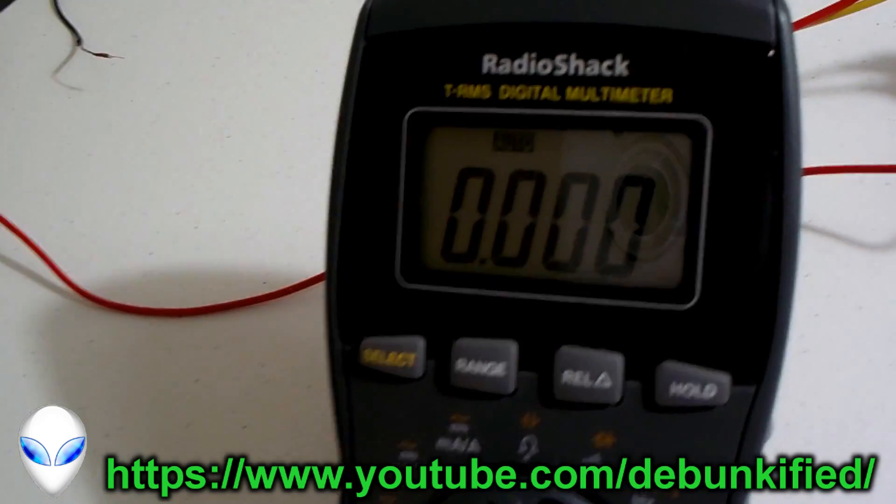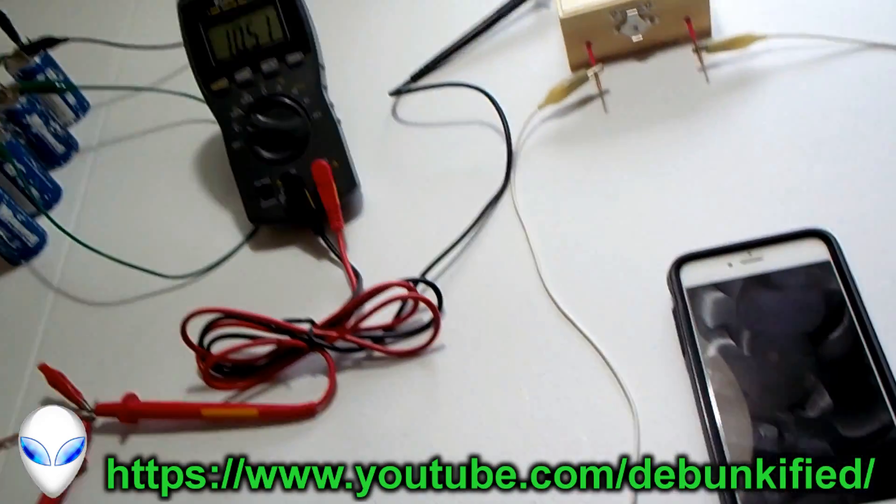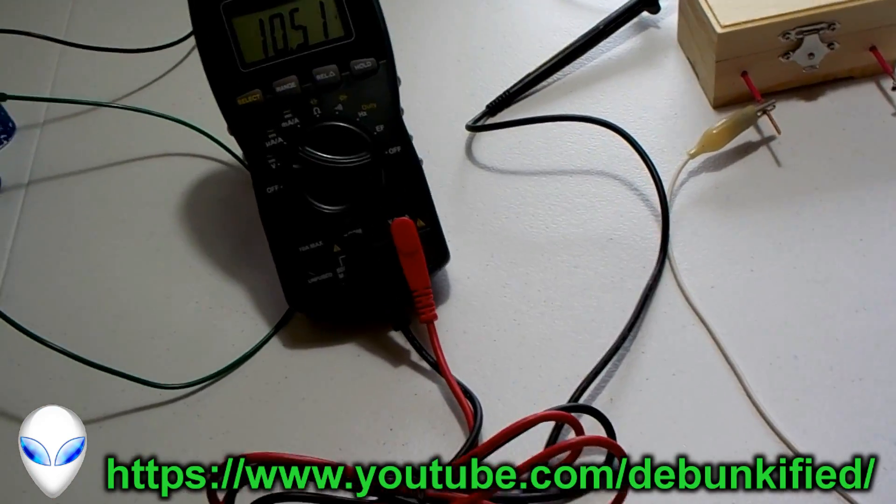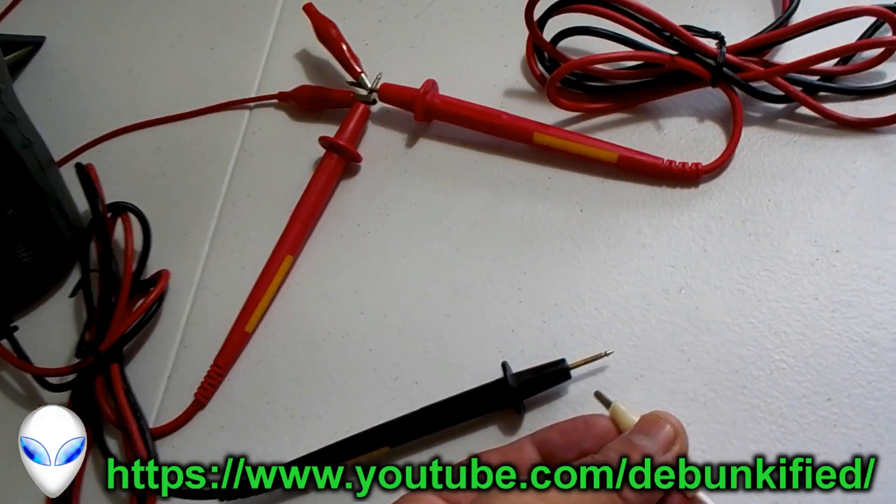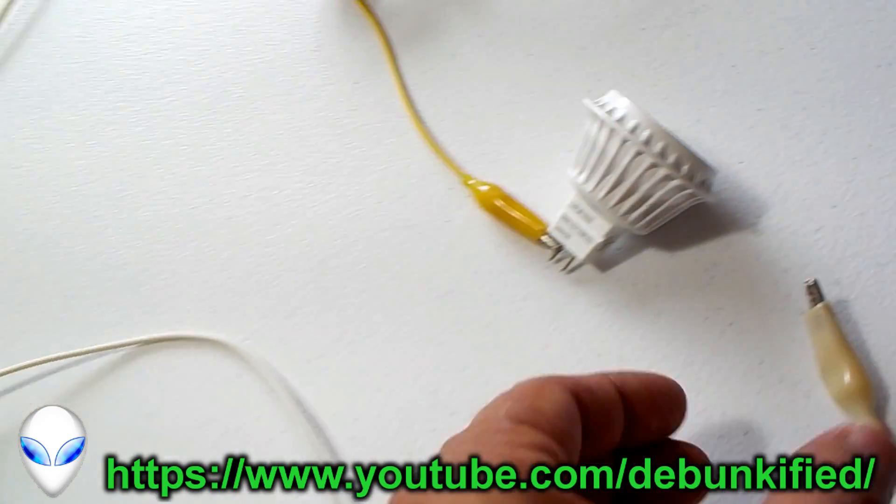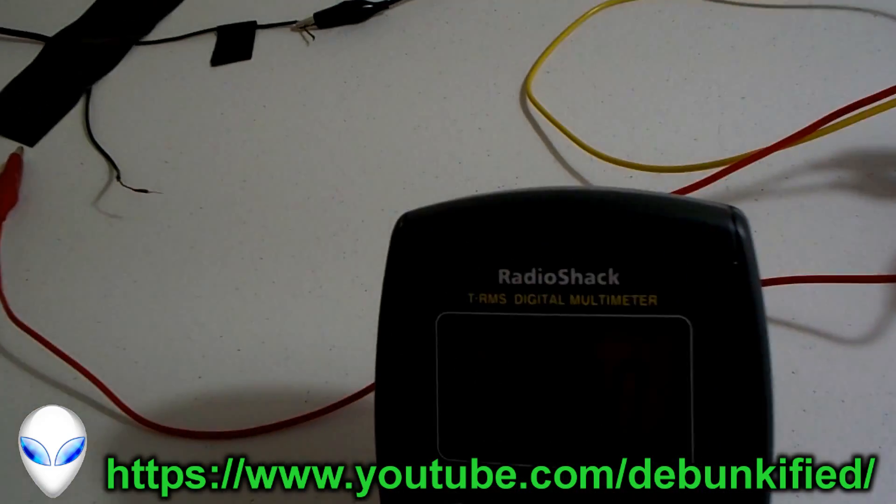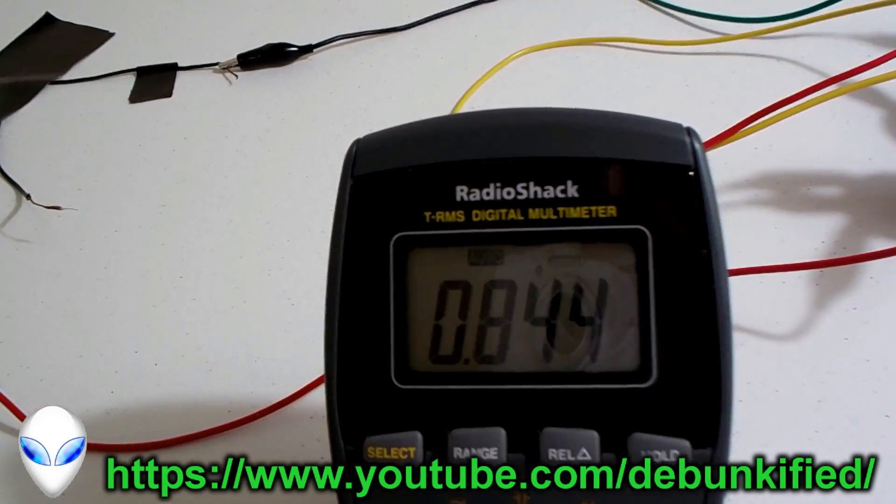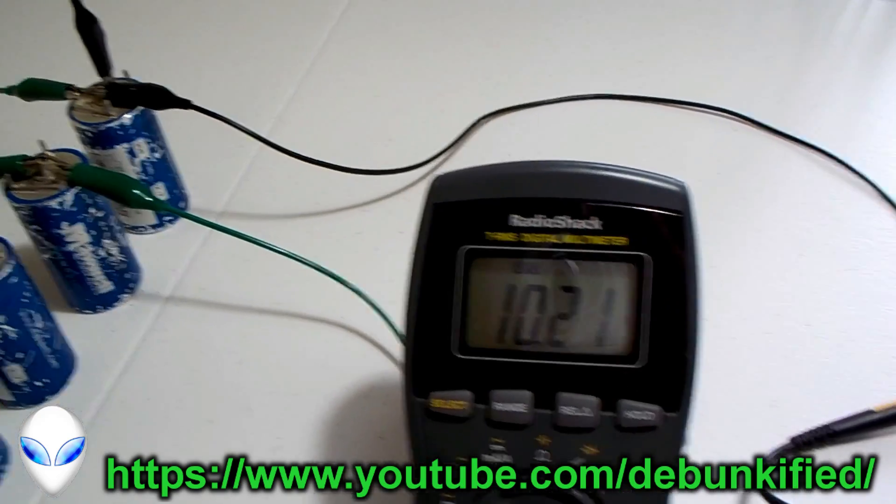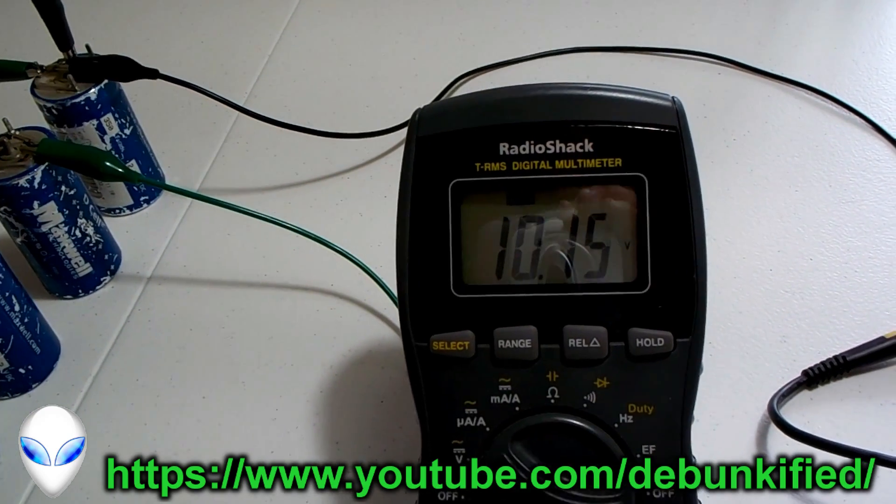Let's turn this on and look at the current and voltage. Simply turn it on. I guess it helps to connect this. All right, so we got light, we got 0.43 amps and 10.25 volts.